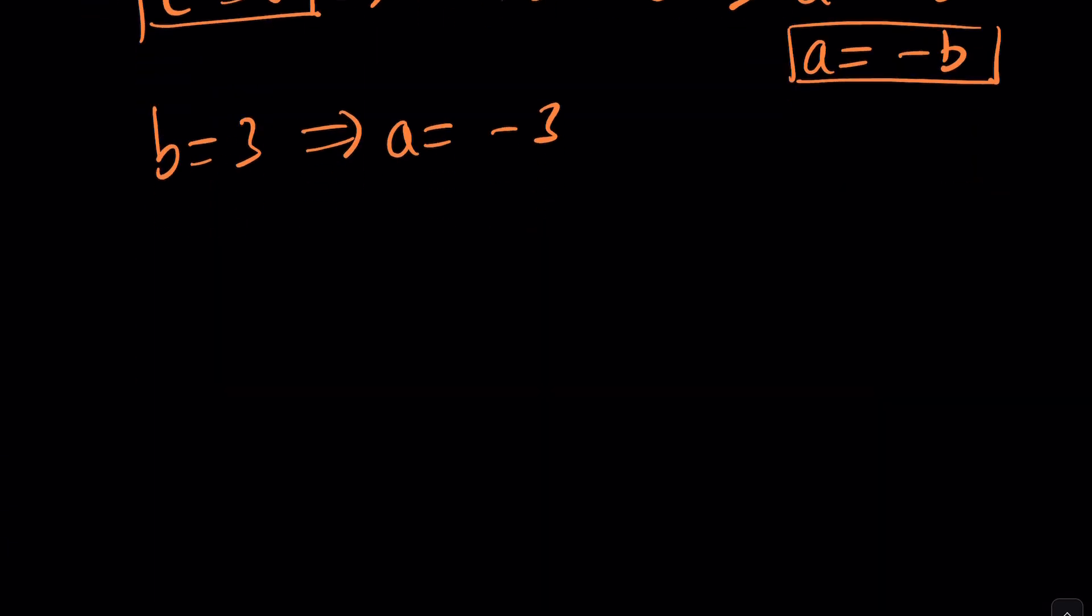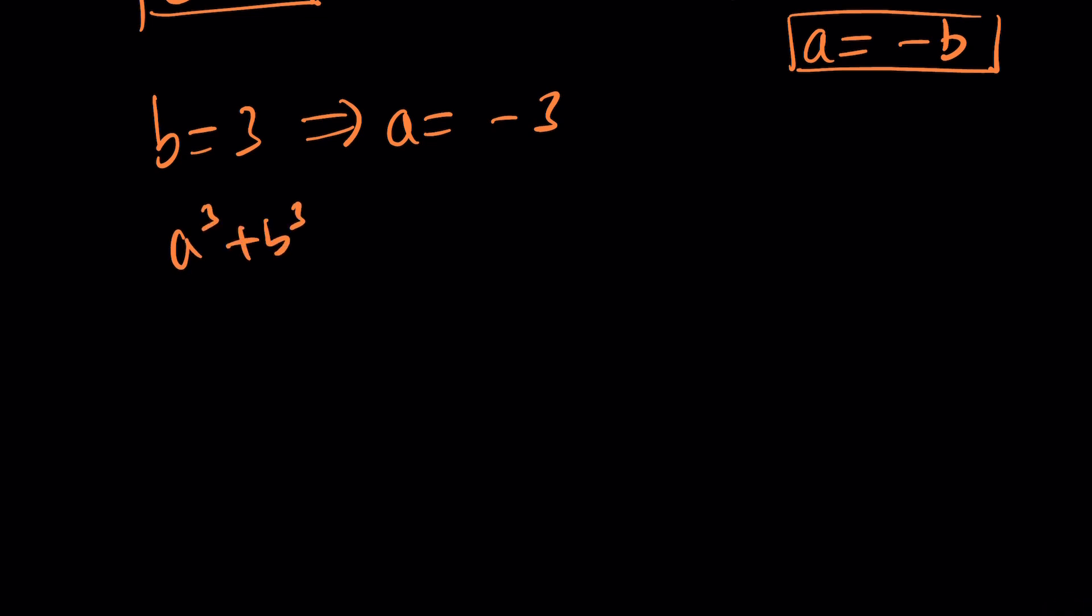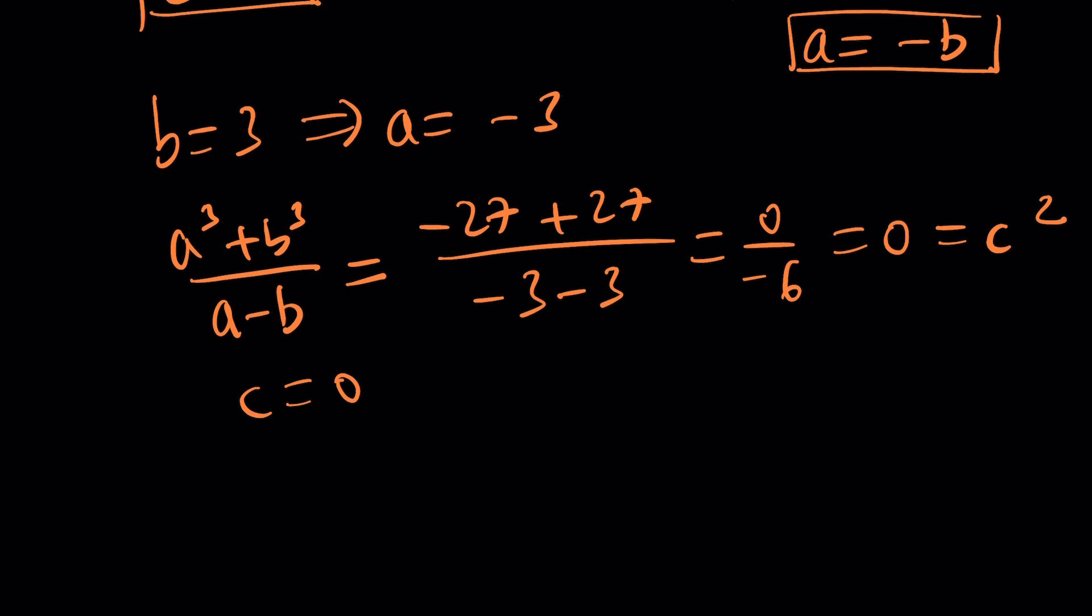And let's go ahead and plug it into our equation. a cubed plus b cubed divided by a minus b. We're going to get a cubed, which is negative 27, b cubed is 27 divided by negative three minus three, which is negative six. And this is zero divided by negative six, which is zero, which is equal to c squared, which means c is equal to zero. Awesome. We got a triple that works, like negative three, three, zero.